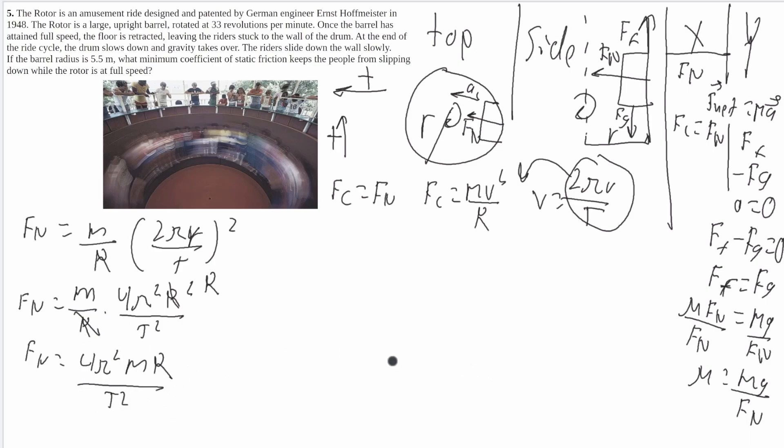So you can now plug this whole thing in to this FN down here. I'm just going to draw this here. So we'll get mu is equal to, it'll be m g, because m g over 1 times, it'll be 1 over this whole long thing. It'll be 4 pi squared m r over t squared.